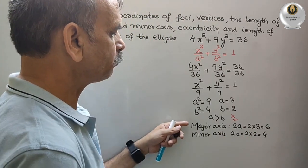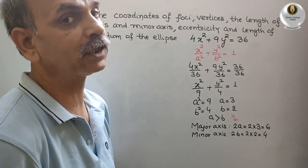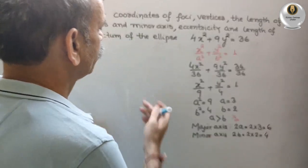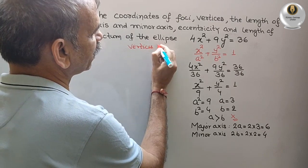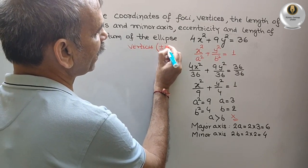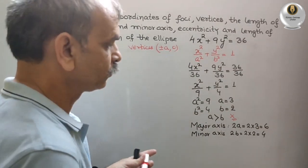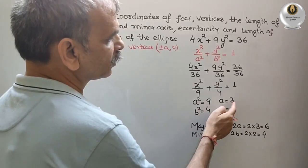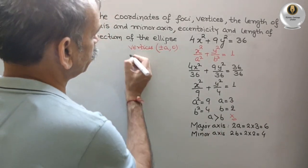So here you got major axis, minor axis. One more thing we will get. What is that? Vertices. So vertices is nothing but (±a, 0). So a is what? 3. So we will get (3, 0) and (-3, 0).